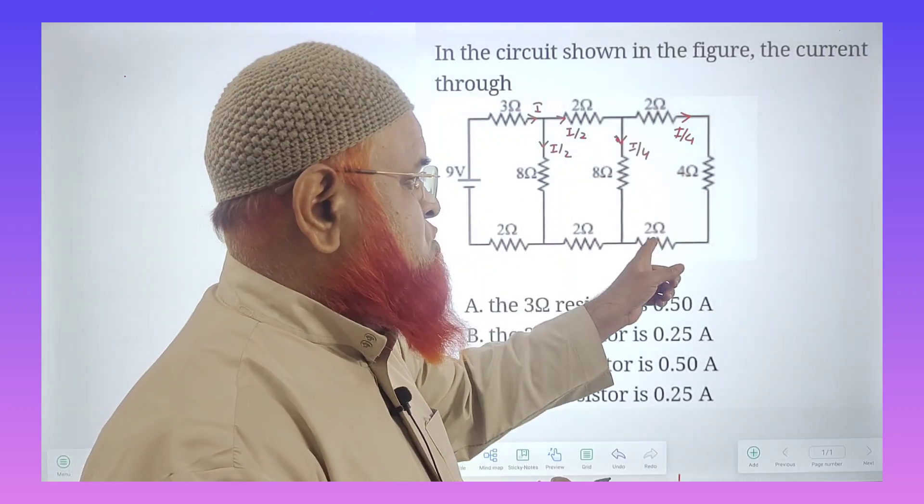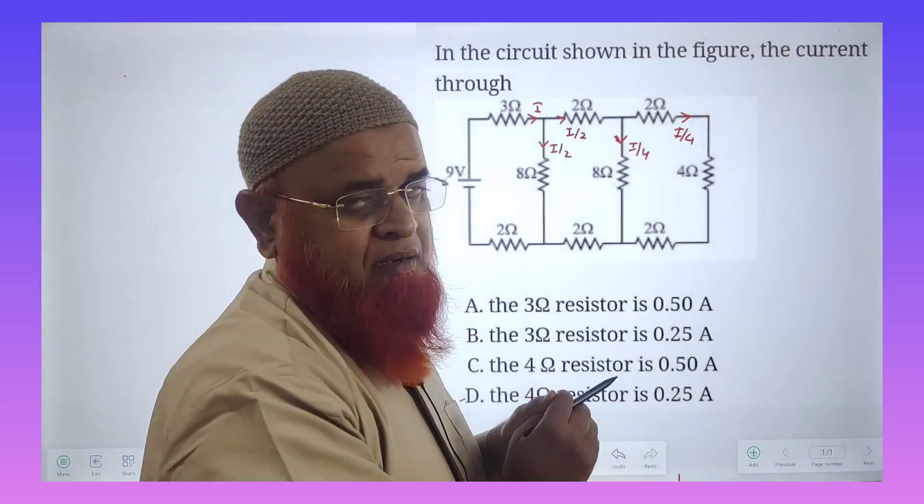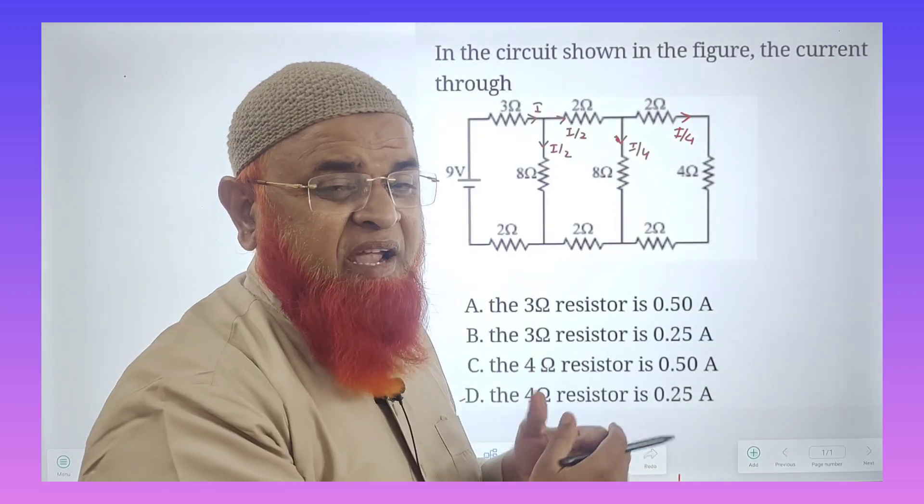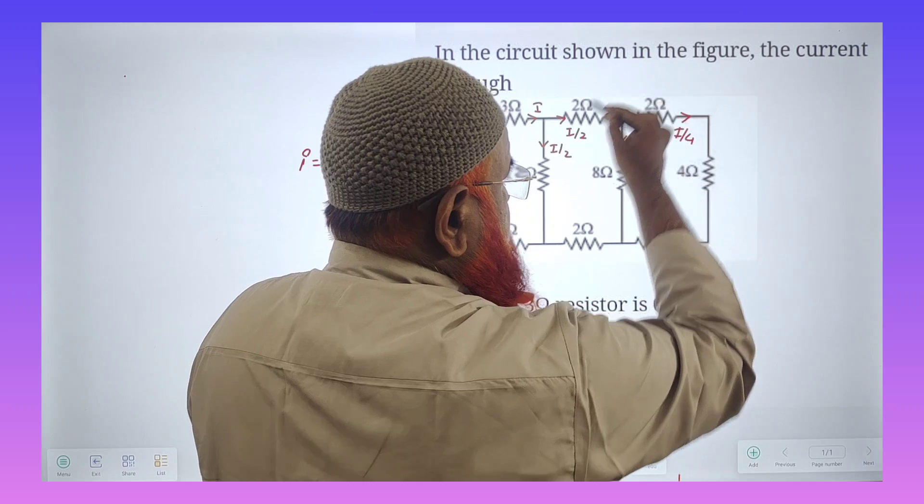So first of all, 2 plus 4 plus 2 is nothing but 8. 8 and 8 are parallel. That means 8 into 8 by 8 plus 8 is nothing but 4 ohms. So this total circuit is going to be 4 ohms.